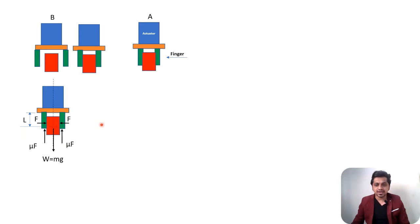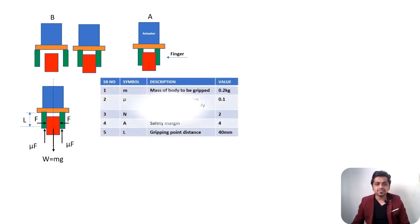Here are our system inputs. My mass of the body to be gripped is 0.2 kg - this is a 200 gram part that I have to grip. The coefficient of friction between fingers we're considering is 0.1. We're considering a lesser value so that it will increase my factor of safety.